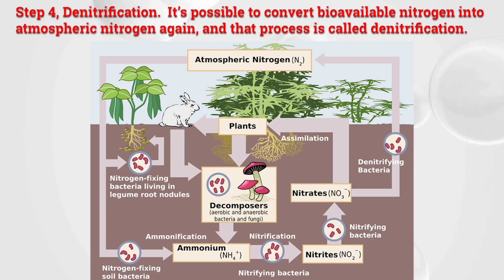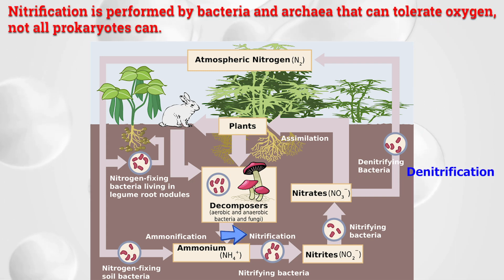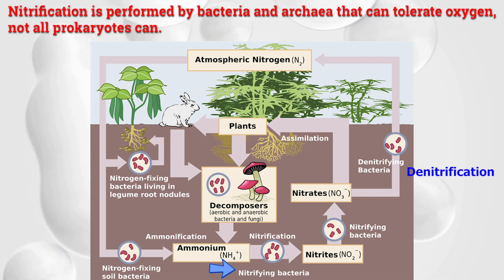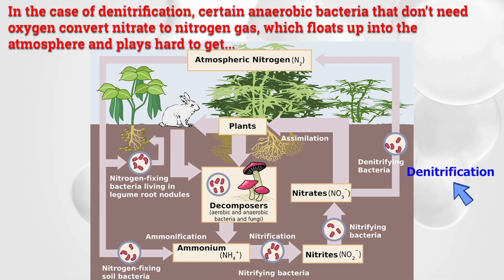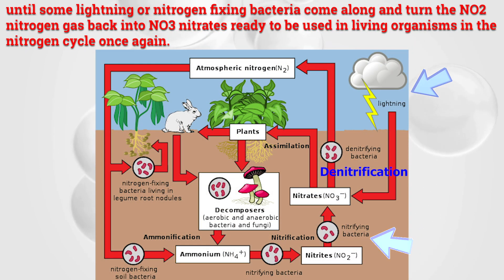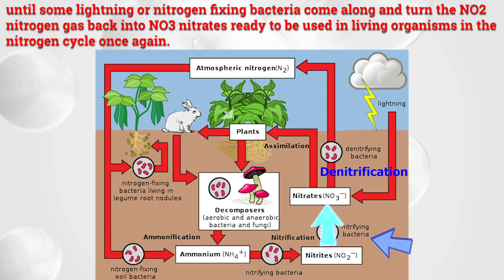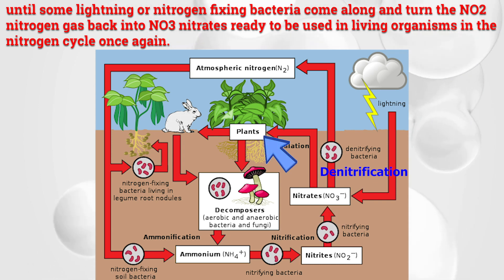Step four: denitrification. It's possible to convert bioavailable nitrogen back into atmospheric nitrogen, and that process is called denitrification. Certain anaerobic bacteria that don't need oxygen convert nitrate into nitrogen gas, which floats back up into the atmosphere and remains there until lightning or nitrogen-fixing bacteria come along and convert the nitrogen gas back into nitrates (NO3), ready to be used by living organisms — and the nitrogen cycle begins again.